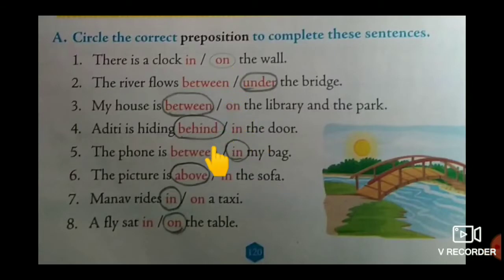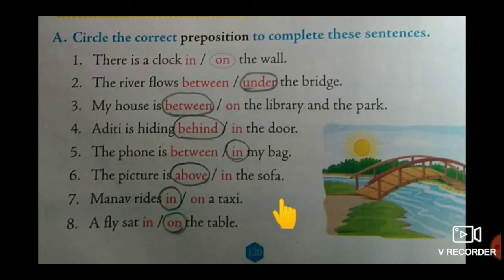The words in colour are prepositions of place. A preposition of place, or position word, tells us where a person, a place, or a thing is. In these cases, we use prepositions: in, on, under, above, behind, and between — all are prepositions of place.